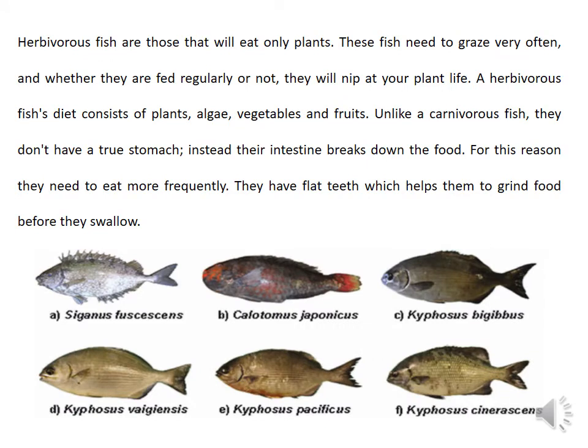General characteristics of herbivorous fishes: they eat only plant materials and need to graze very often. Their diet consists of plants, algae, vegetables, and different types of fruits. Unlike carnivorous fishes, they don't have a true stomach; instead, their intestines break down the food, so they need to eat more frequently. They have flat teeth which help them grind food before swallowing. Their intestine is three times longer than their body length. In herbivorous fishes, the stomach is totally absent — their intestine is modified for digestion and is lined with finger-like out-pocketings called villi that increase the surface area for food absorption.